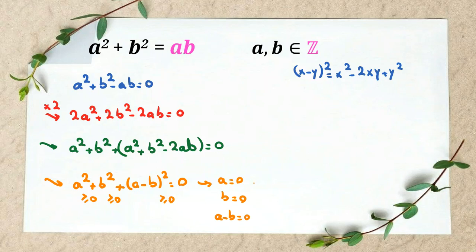So the only possible case is a = b = 0. And if you check in the main equation, it's satisfied. If you have questions, send a message to my WhatsApp number. Please don't forget to subscribe, turn on the bell, and like the video. Thanks, bye!